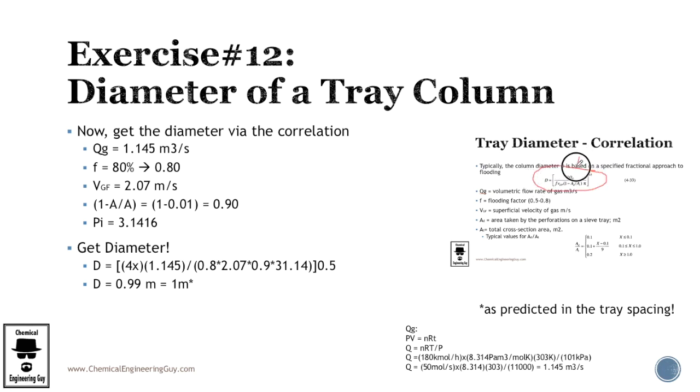We got the volumetric flow rate. Yes. Four times the volumetric flow rate. Do we got the flooding factor F? Yes. It's 0.80. So we got the superficial velocity BGF. Yes. It goes here. So we got the 1 minus ADAH, which is here. Yes. 0.90.